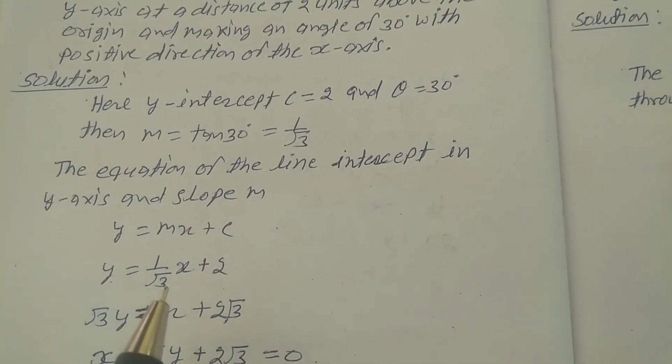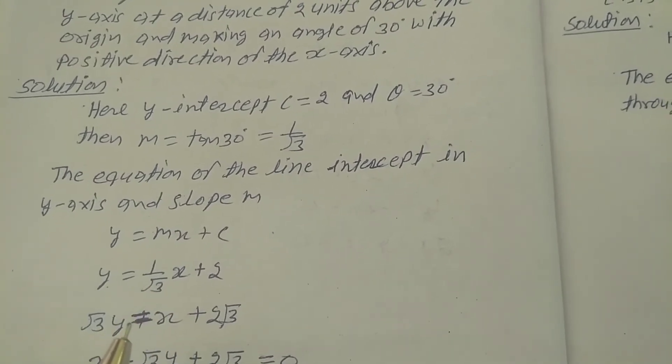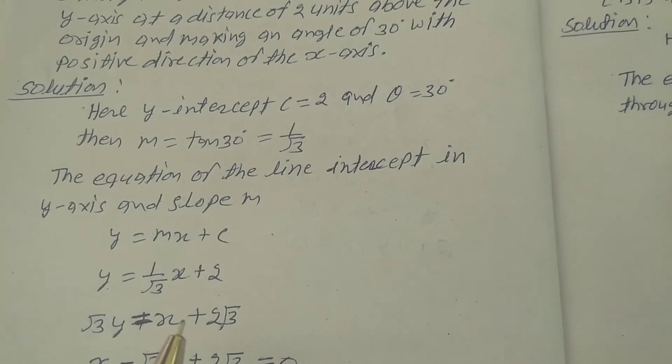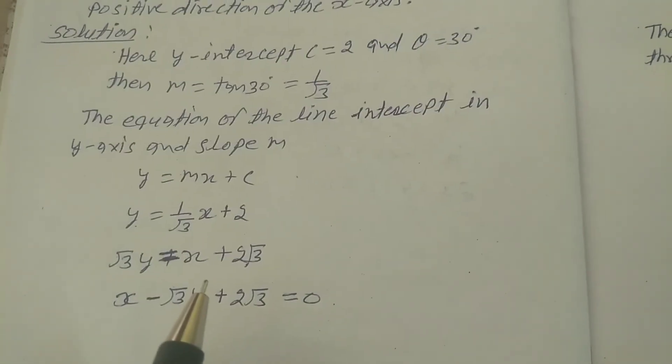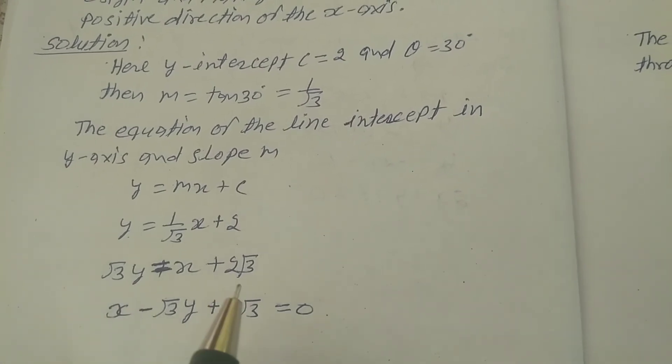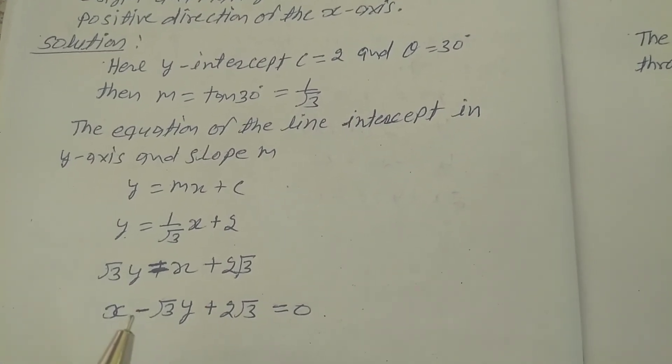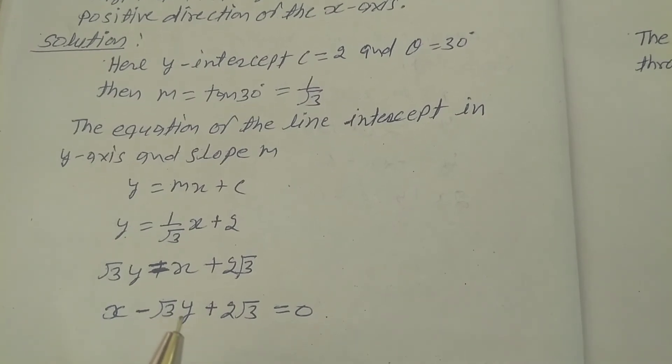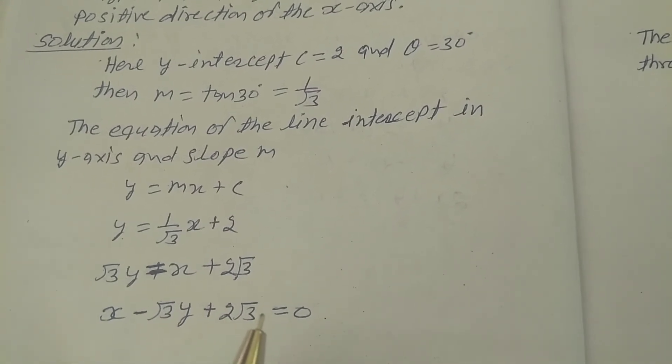Cross multiplication is done, so root 3 y equals x plus 2 root 3. This term is transferred to this side, so x minus root 3 y plus 2 root 3 equals 0.